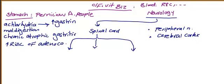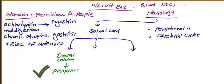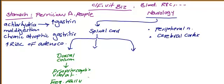In the spinal cord, three tracks are basically affected. The dorsal columns are affected, causing problems with proprioception and vibration sense. This leads to frequent falls.